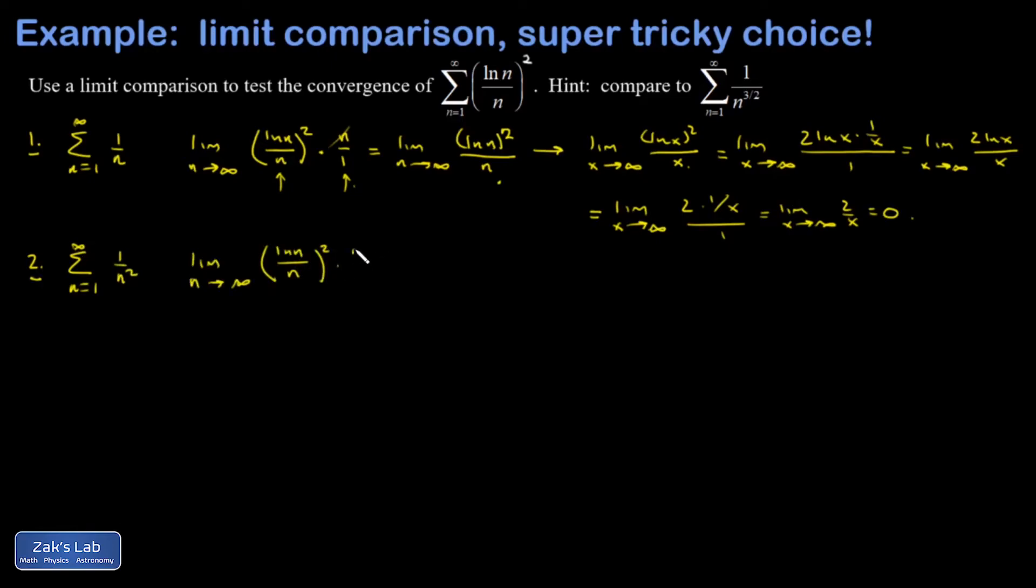When I divide by one over n squared, that gives n squared over one. And out of this one, the n squareds are going to cancel. And I just get the limit as n goes to infinity of natural log n all squared, which clearly goes to infinity.